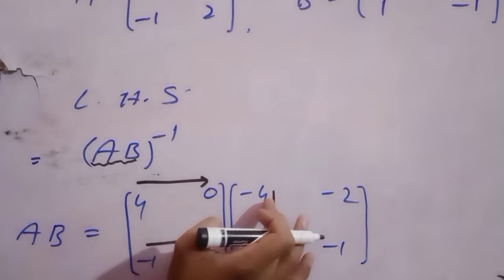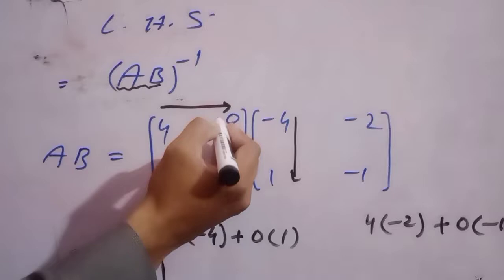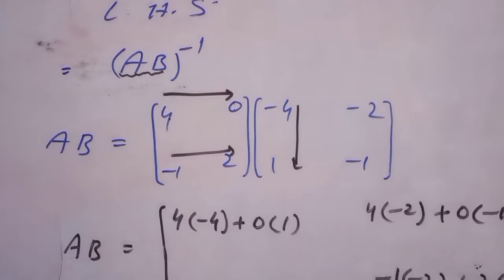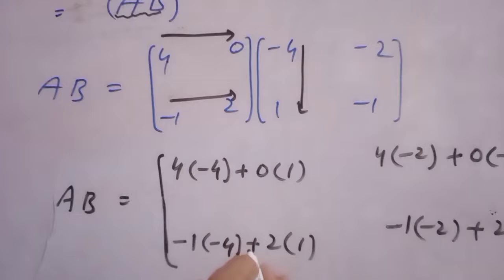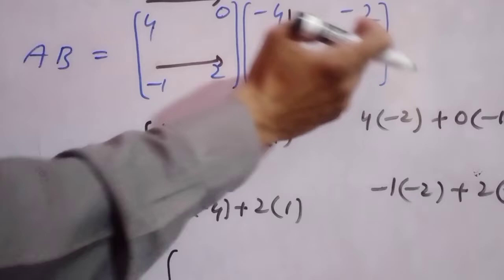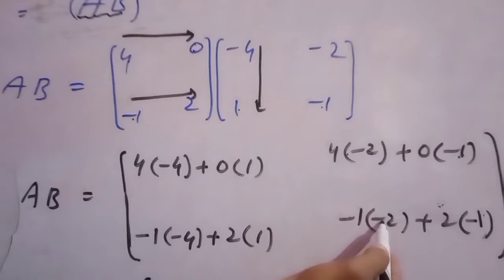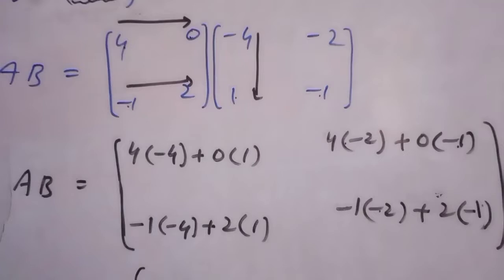First row, second row — दोनों rows को first column के साथ multiply करेंगे। First element 4, multiply minus 4; second element 0 multiply 1. Second row: minus 1 multiply minus 4; 2 multiply 1. फिर दोनों rows को second column के साथ भी multiply करेंगे: 4 multiply minus 2; 0 multiply minus 1. Second row: minus 1 multiply minus 2; plus 2 multiply minus 1.